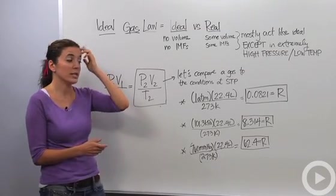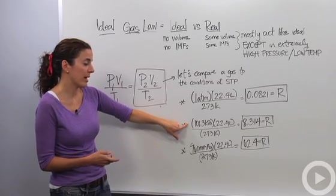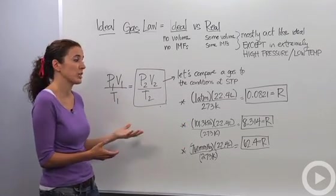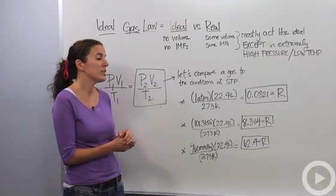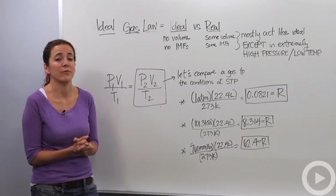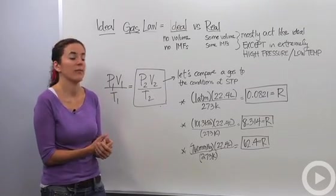And don't forget those conditions are 1 atmosphere or 101.3 kilopascals or 760 millimeters of mercury for your pressure. Our molar volume will always be, no matter what gas we're talking about, 22.4 liters. And our temperature will always be 273 Kelvin or zero degrees Celsius.